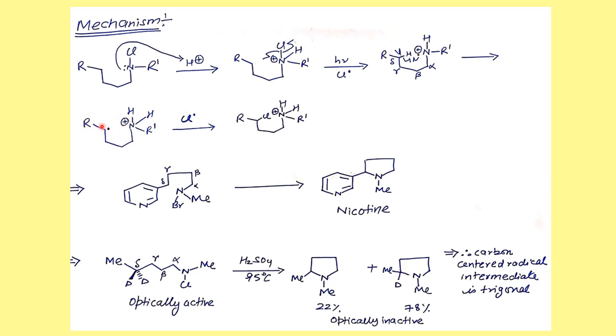As soon as the proton abstraction takes place, there is a radical formation at the delta position. This delta position radical is then captured by the chloride radical which was ejected in the first position.